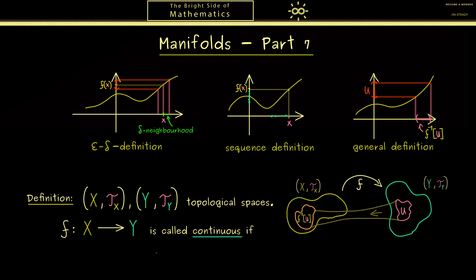So formally we would write: for all U in the topology Ty, we get that the pre-image f^{-1}(U) is in Tx. So I think this is very easy to remember. Continuous means pre-images of open sets are always open sets.